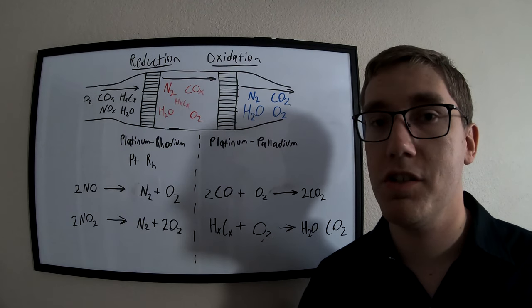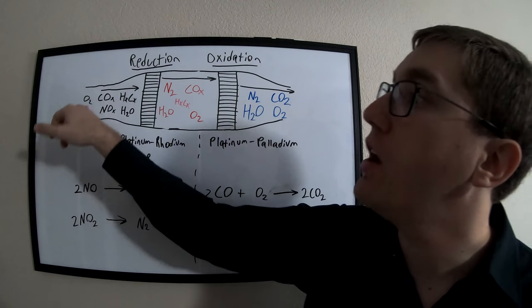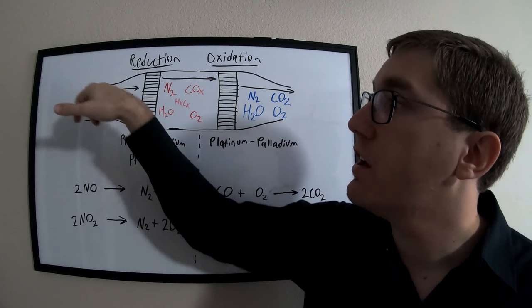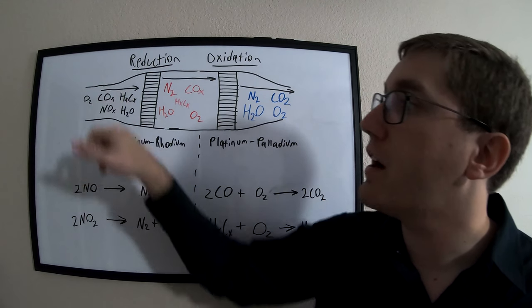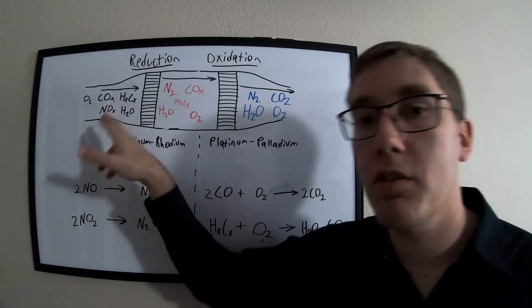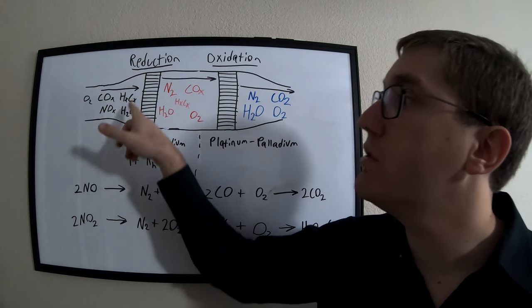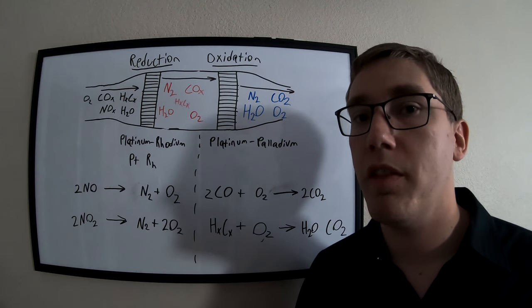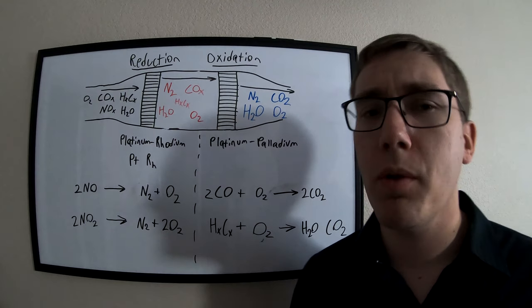Originally, when the internal combustion engine burns the fuels, we'll have unburnt oxygen here, carbon monoxide, and carbon dioxide. We will have our nitrogen oxides, including NO and NO2. We will have our unburned fuel in the form of hydrocarbons, and we will have water.